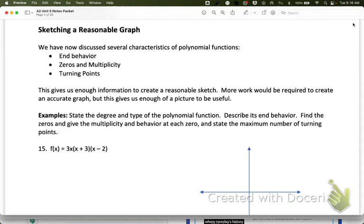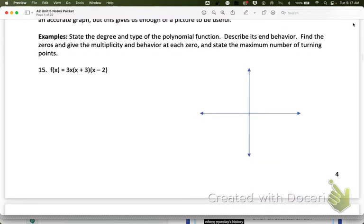So here's what we know. We have what we know about end behavior, zeros and multiplicity, and the turning points. This gives us enough information to create a reasonable sketch. Now, this is not going to be an accurate, perfect graph. But enough of a picture is going to be useful to know what the shape and whatnot is going to be. So for each of these, we don't really care about the y values. We're just trying to get an estimate. So we want to figure out end behavior, zeros, multiplicity, and figure out the turning points so that we know what the graph should look like.